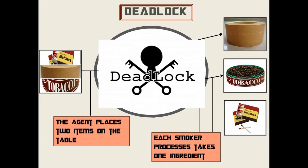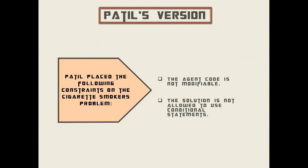Moving on to Patil's version theory: Patil placed several constraints on the cigarette smokers problem. The first is that the agent code is not modifiable, and the second is that the solution is not allowed to use conditional statements.